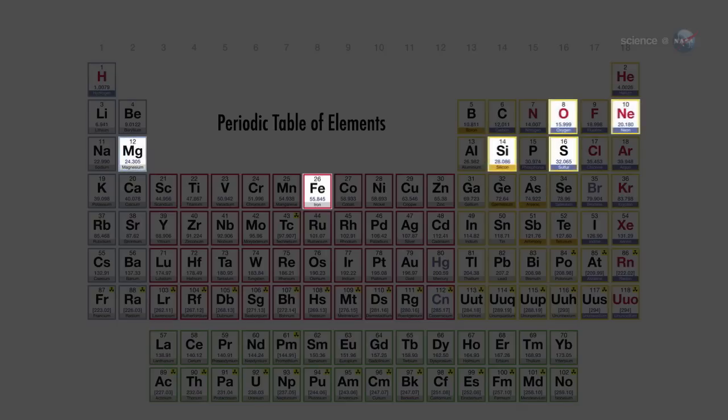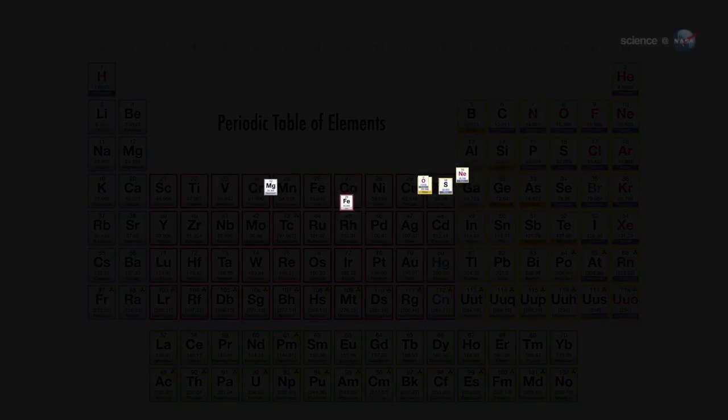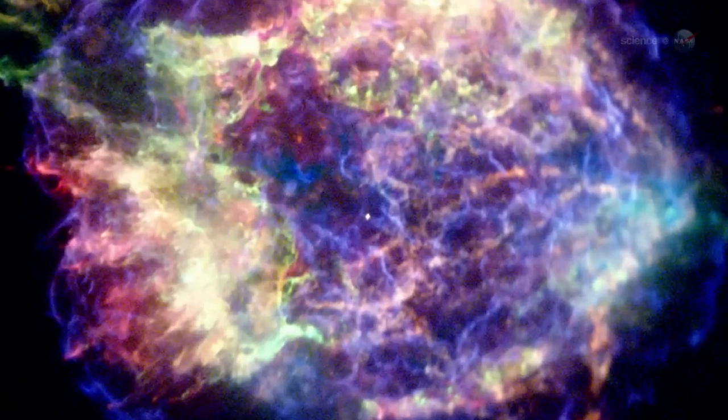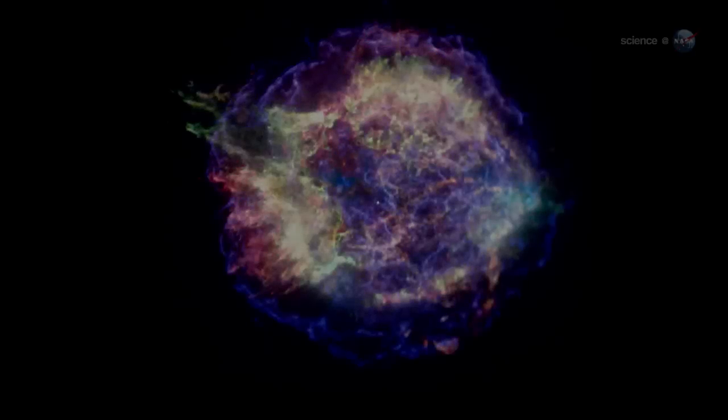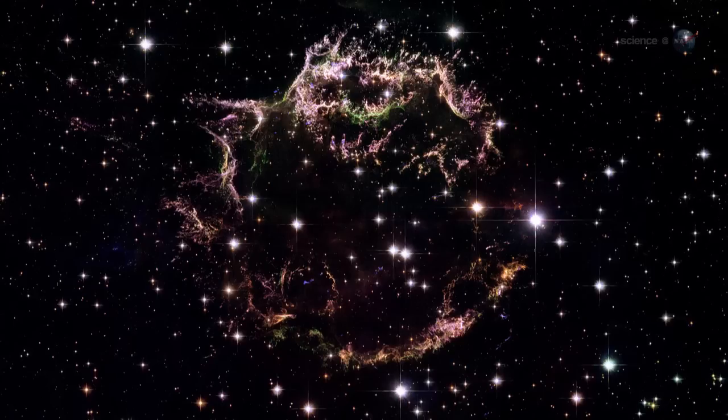Comparing a chemical model of the original star to the actual distribution of elements seen today, they realized something amazing. When the star exploded, it turned itself inside out. Most of the iron, which originally formed deep inside the star, is now located near the outer edges of the debris cloud. Other heavy elements are also located at the outer limits of the debris zone.